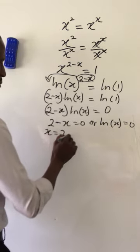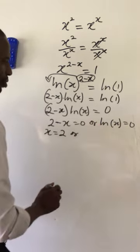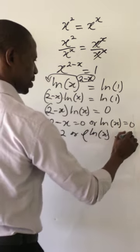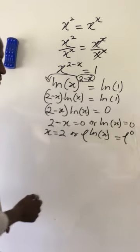X is equal to 2, or we introduce e to this side. So e to the power of natural log of x equals e to the power of 0. E to the power of 0 will give us 1.